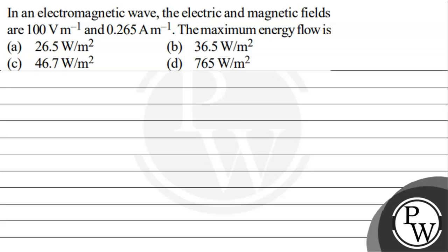Option A: 26.5 watt per meter square, option B: 36.5 watt per meter square, option C: 46.7 watt per meter square, and option D: 765 watt per meter square. For this we need to understand the key concept.